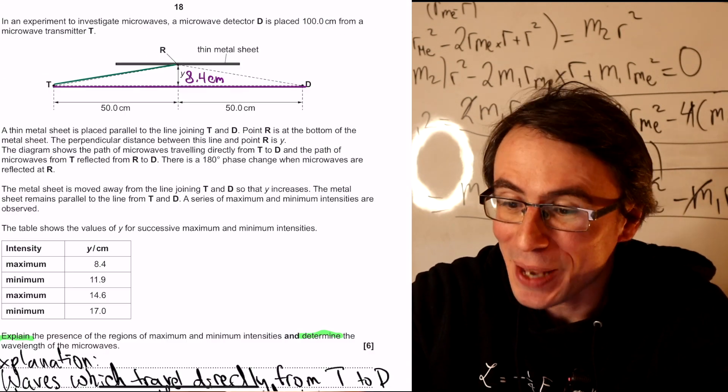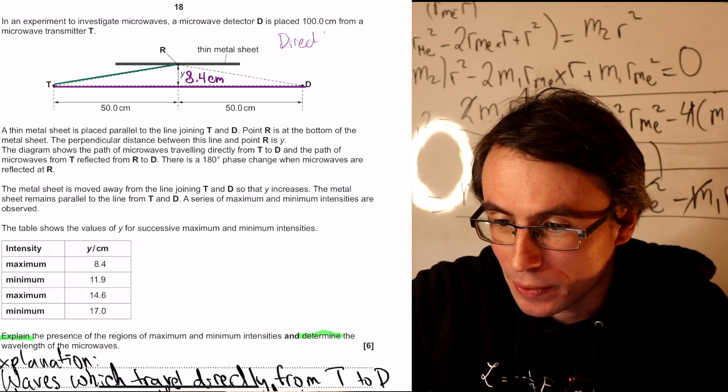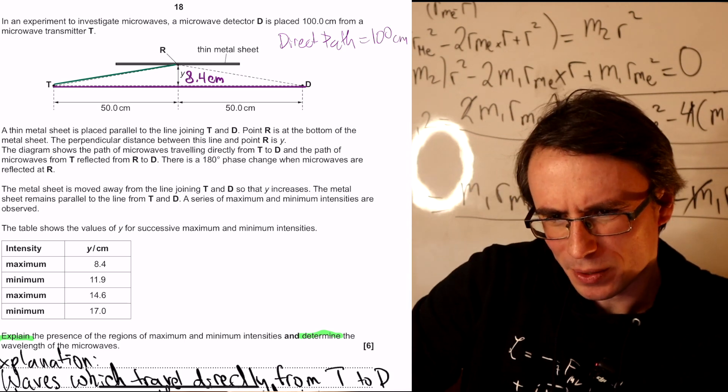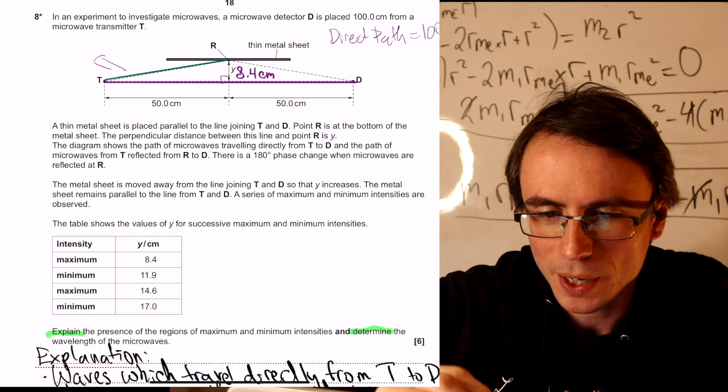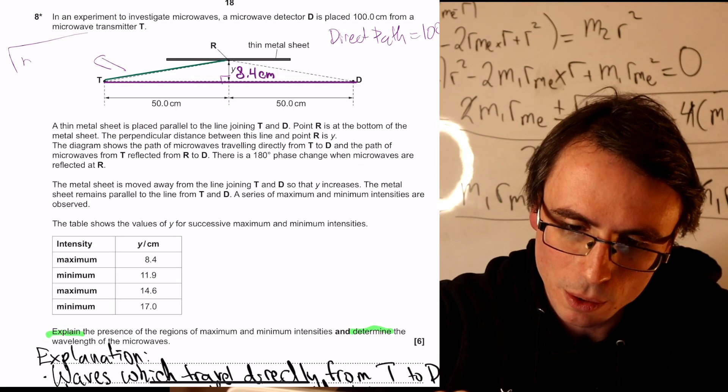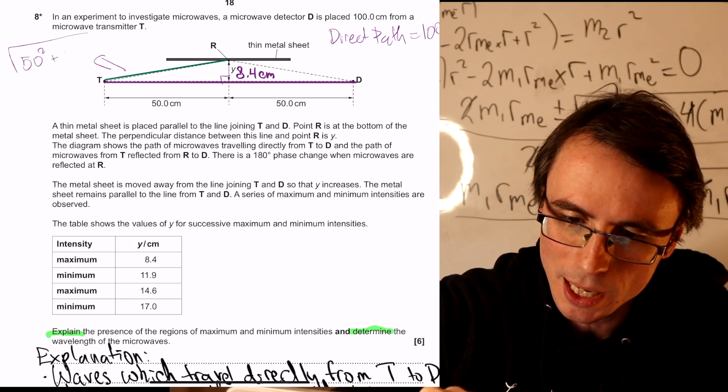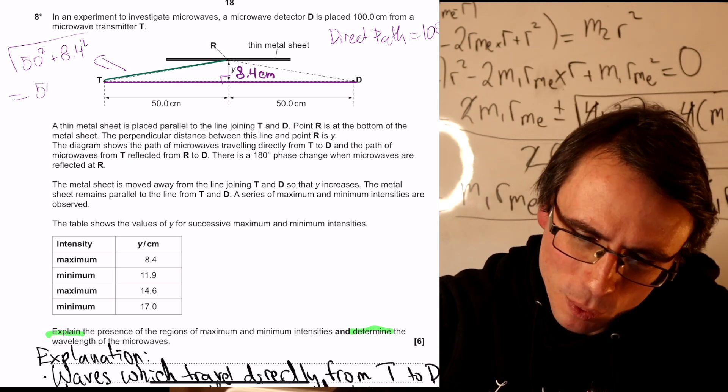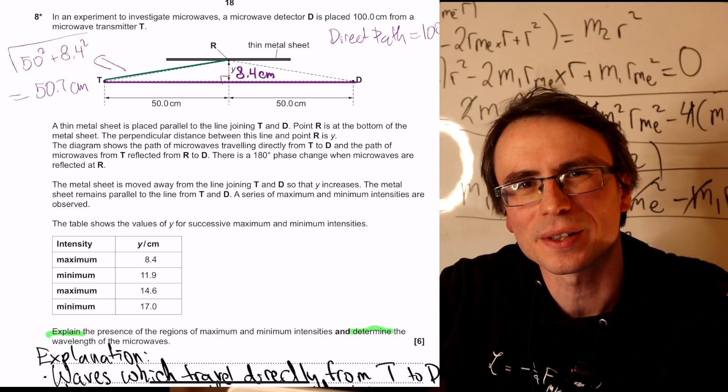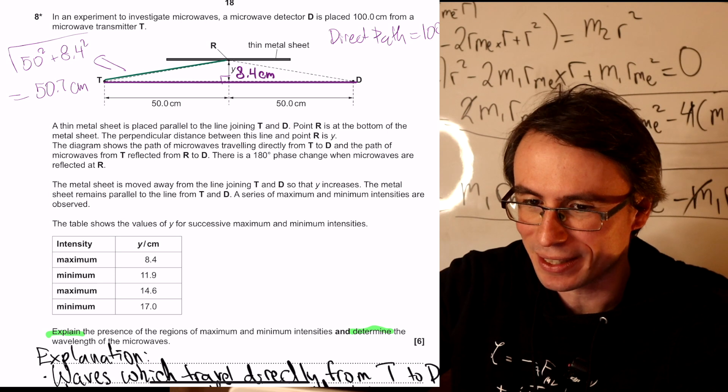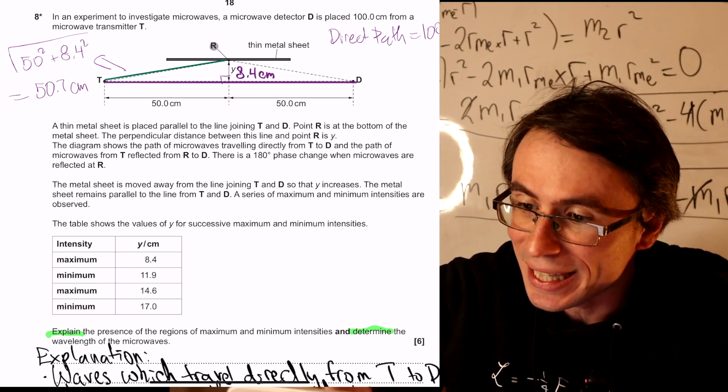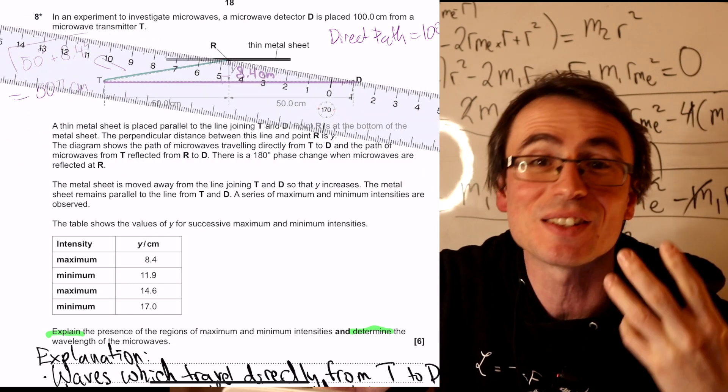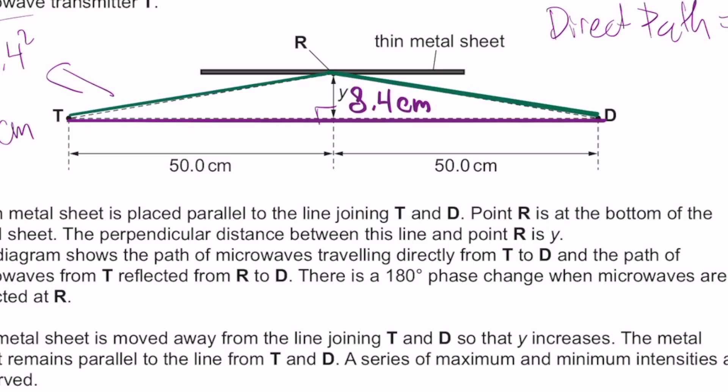What is this distance here going to be? Well, we can figure out the path difference because our direct path, which is just this one here, is simply 100 centimeters. And our reflected path is going to be twice this distance. This will just be given by Pythagoras's theorem as the square root of 50 centimeters squared plus 8.4 squared, square rooted. And that's going to be around 50.7 centimeters, up to three significant figures. But this is not our total reflected path because this is just this side. The complete reflected path also involves looking at this distance right here as well.